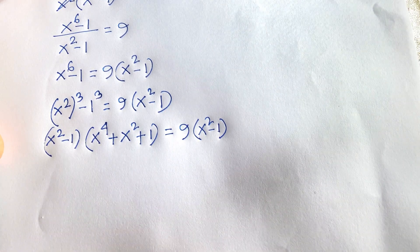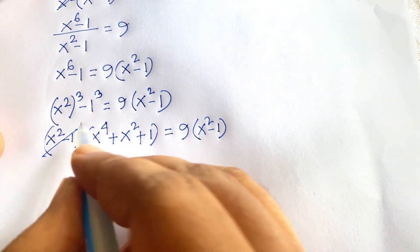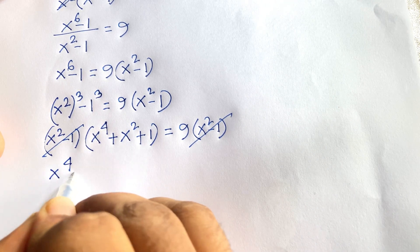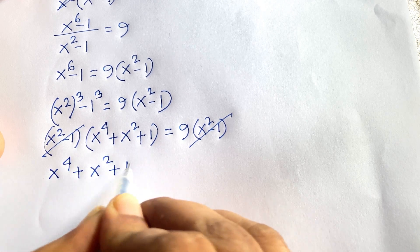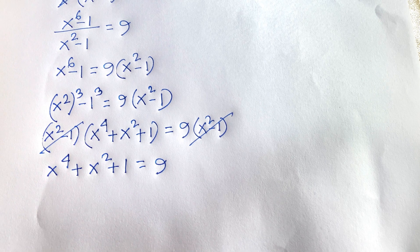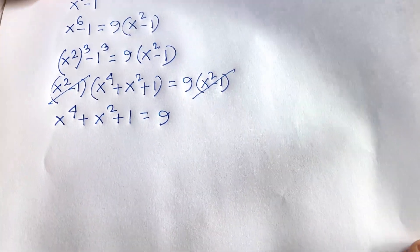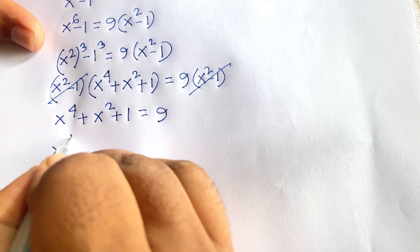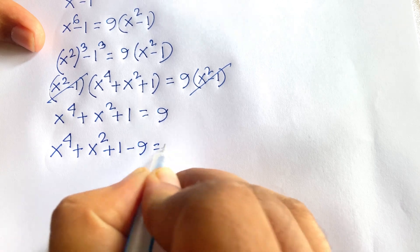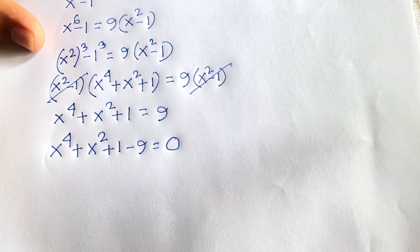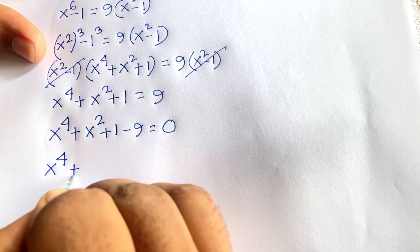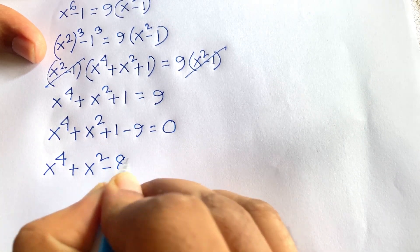Now the (x^2 - 1) terms cancel from both sides, and we find our equation is x^4 + x^2 + 1 = 9. Rearranging by subtracting 9 from both sides: x^4 + x^2 + 1 - 9 = 0, which simplifies to x^4 + x^2 - 8 = 0.